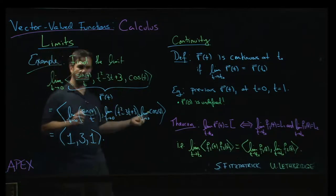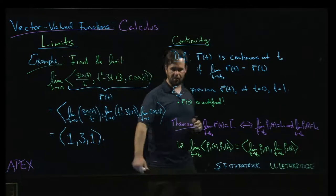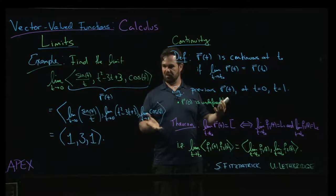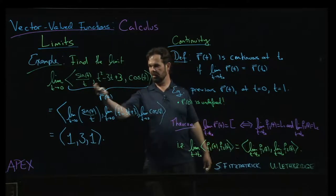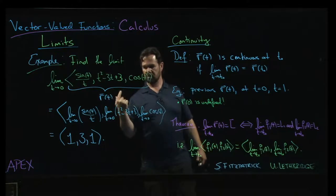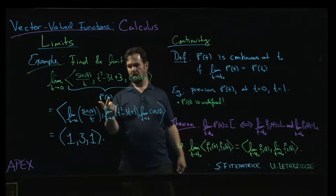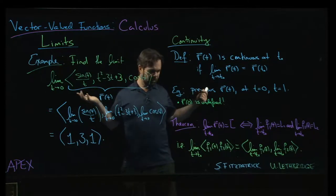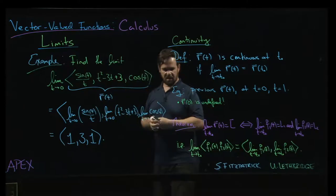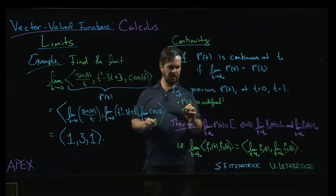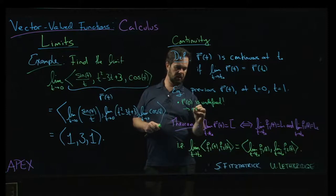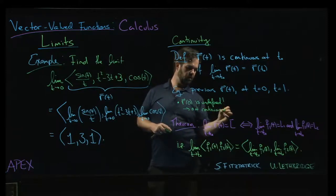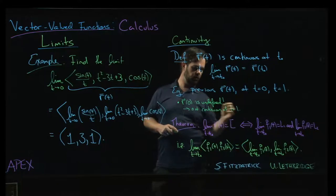So there's a removable discontinuity at that point. If I wanted to kind of modify this function, give you a piecewise defined vector-valued function, where I tell you that at 0, I could tell you that r of 0 is equal to 1, 3, 1, and then it would be continuous. But as stated, it's not defined, and that means that it can't be continuous at t equals 0.